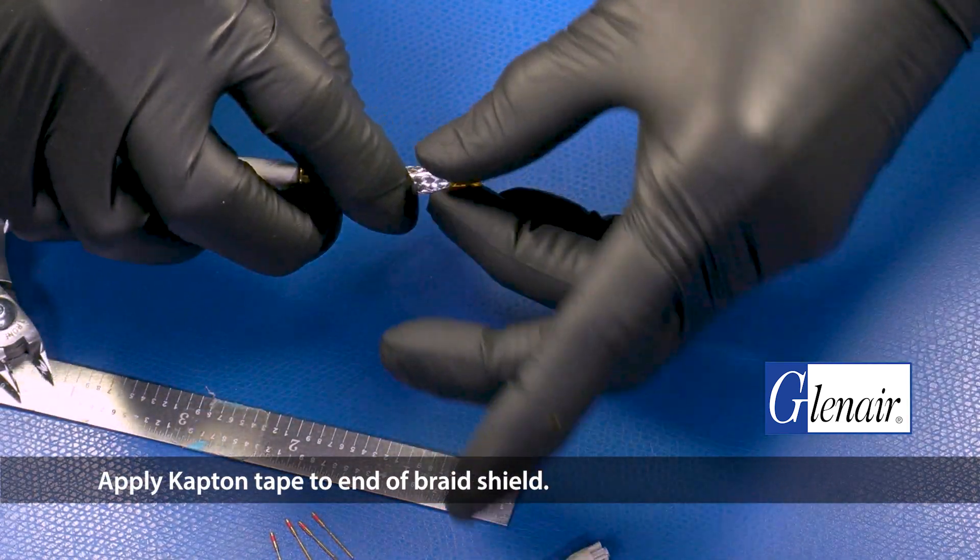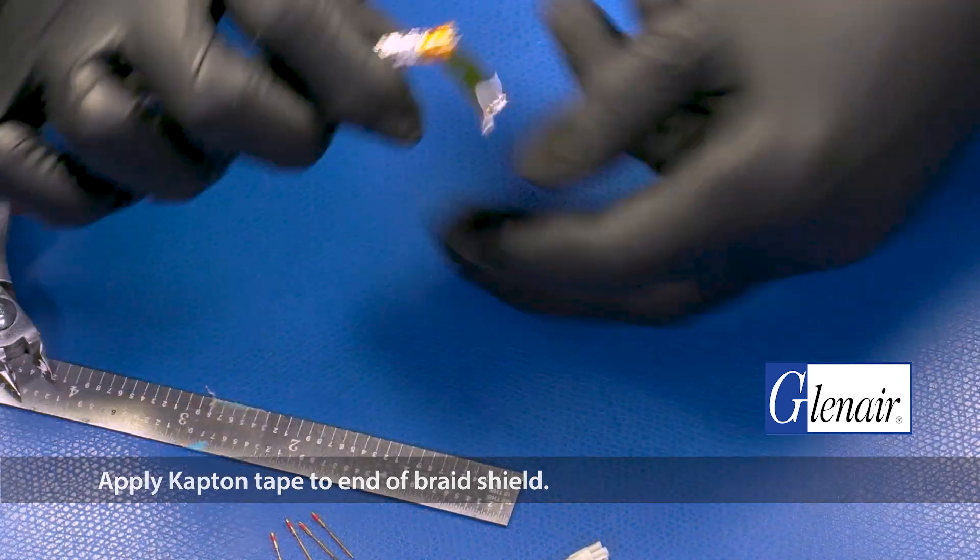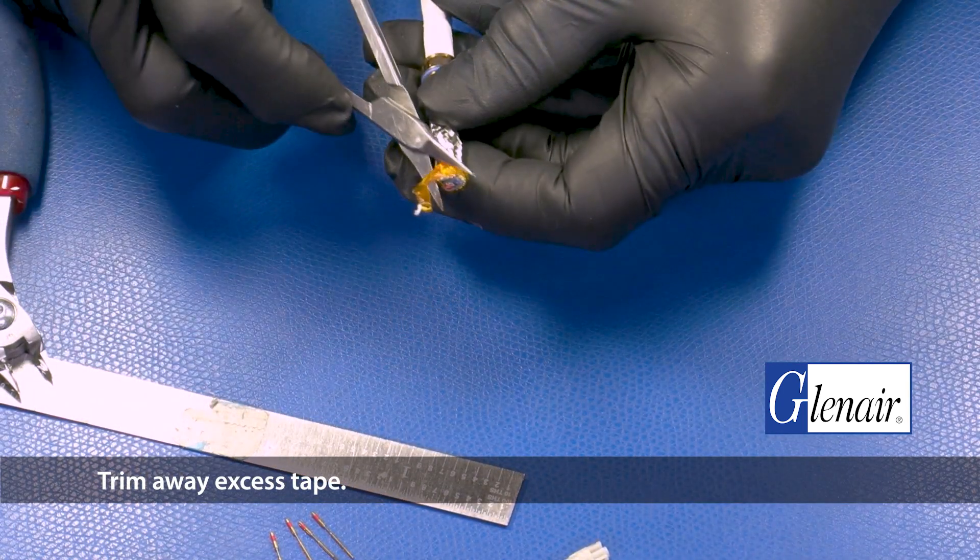Apply Kapton tape to the end of the braid shield. Trim away excess tape.